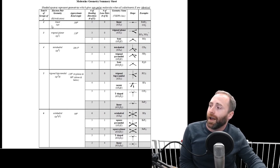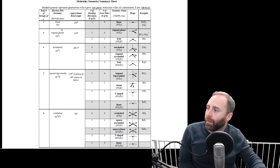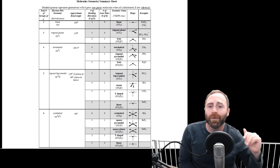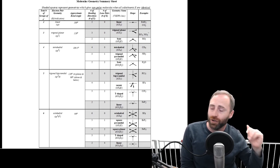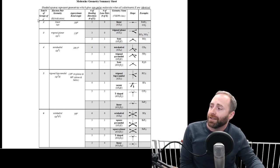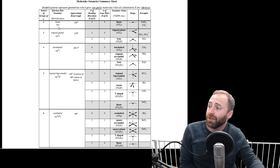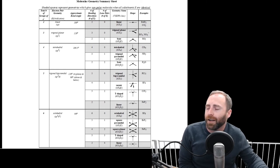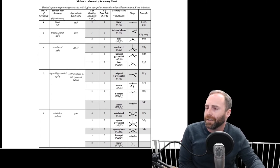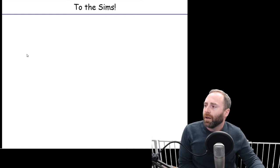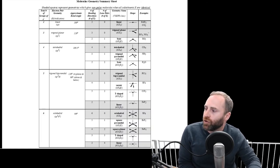One thing this table does is give you what's called hybridization, shown here in parentheses. The quick and dirty truth about hybridization in general chemistry one: you can just memorize the steric number — it's the same as the number of electron groups — and the steric number tells you your hybridization. So if you have a steric number of two, your hybridization on the central atom will be sp. You don't have to have a deep understanding of what that really means; you can mostly just regurgitate it.